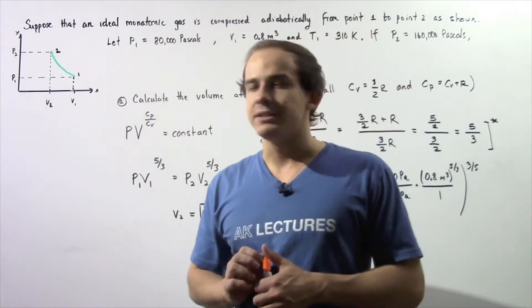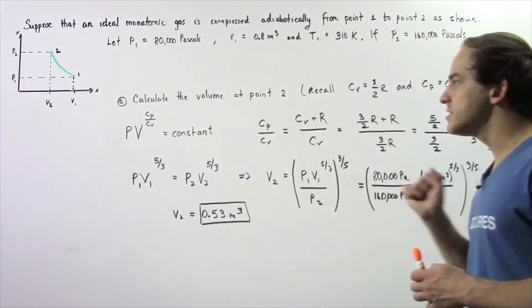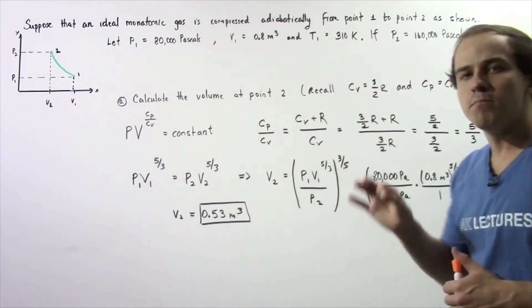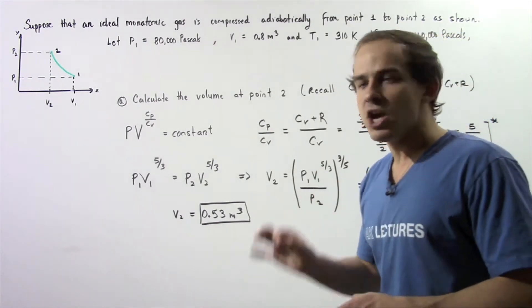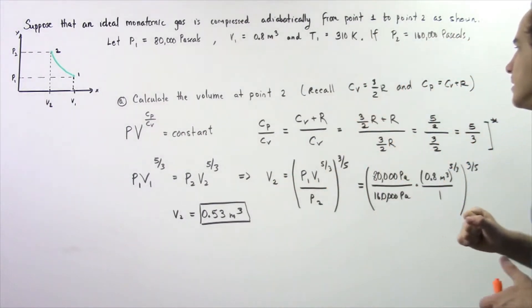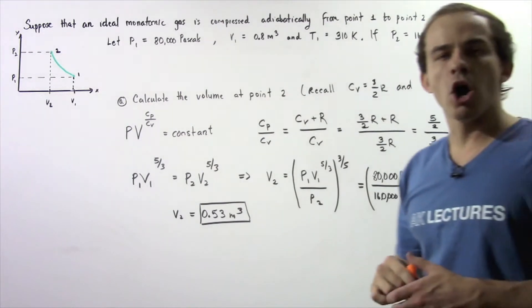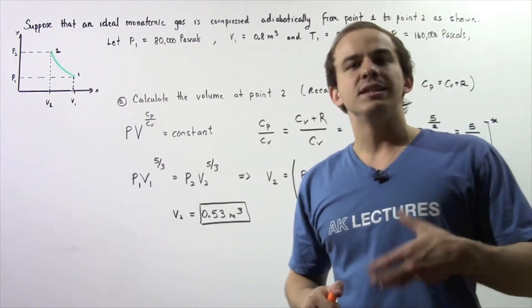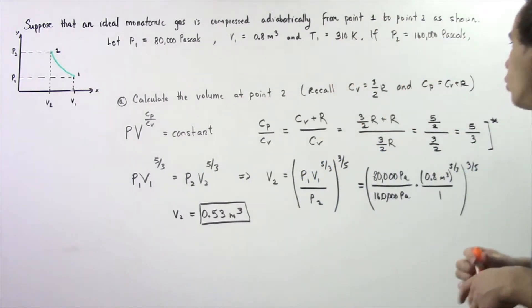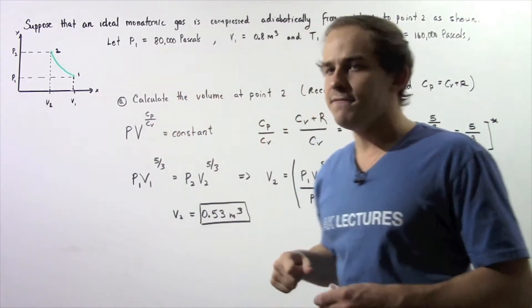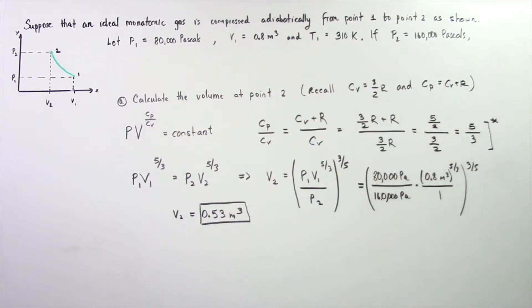Recall when we spoke about the equal partition principle of energy, we said that CV, the molar specific heat when our volume is constant, is equal to 3/2 multiplied by R. When we spoke about the molar specific heat, we said that the relationship between CP and CV is given by CP equals CV plus R.